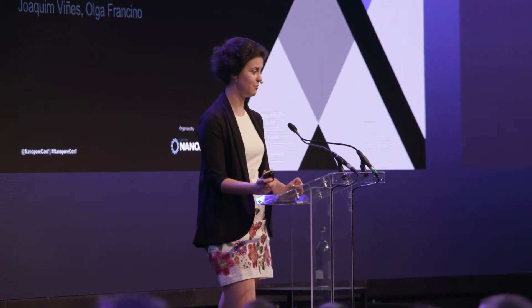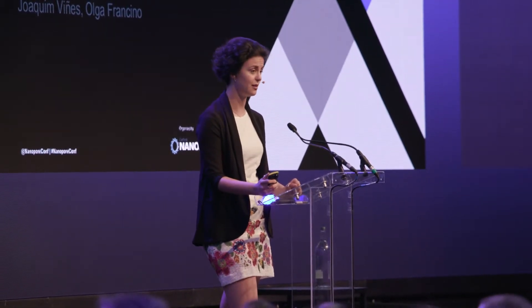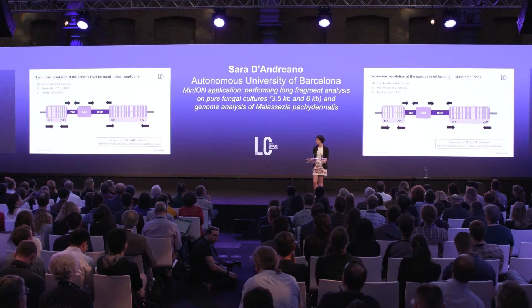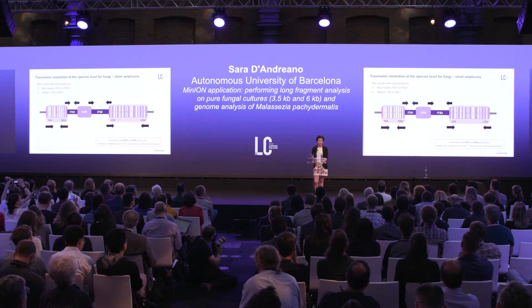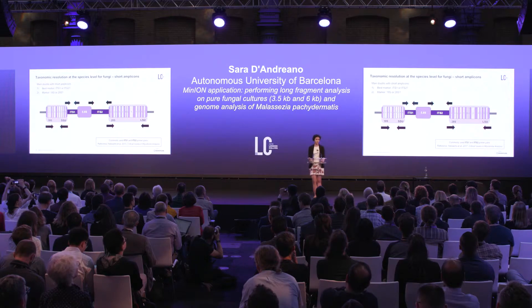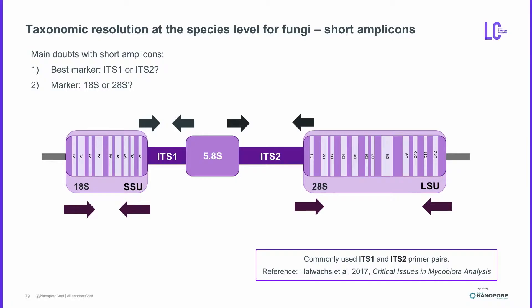Thank you Thomas for the introduction and good morning all. I'm a PhD student working with fungal communities in microbiological cultures and in complex samples. This is the fungal operon I'm studying, composed of three conservative regions and two hypervariable ones. Inside the conservative regions we have more domains that can help in taxonomical assignment. The key question is: which is the best marker for taxonomical assignment?